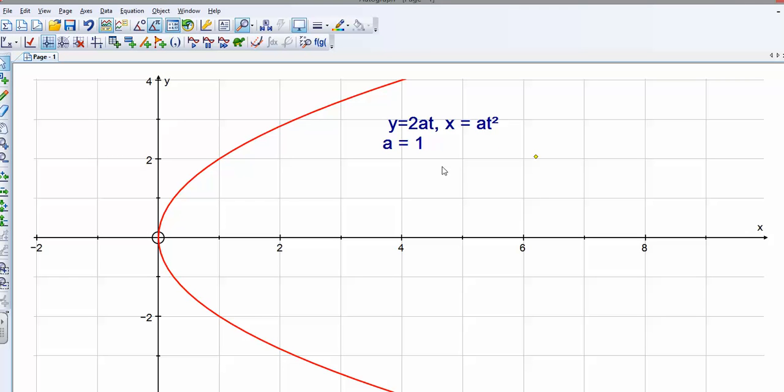So those are our parametric equations, and we've got a is 1. So our first question is, what's going to happen to the parabola as I change the a value? Now, you've already had time to think about that, so let's see if you were correct.